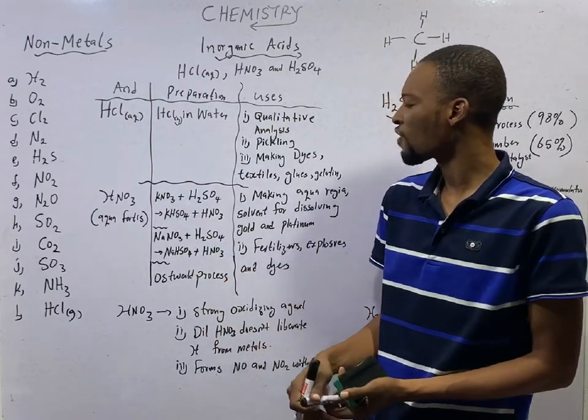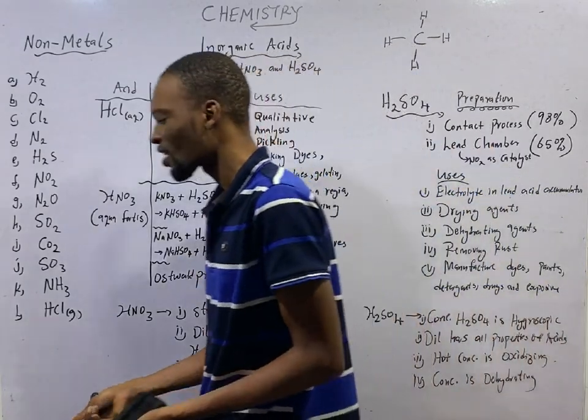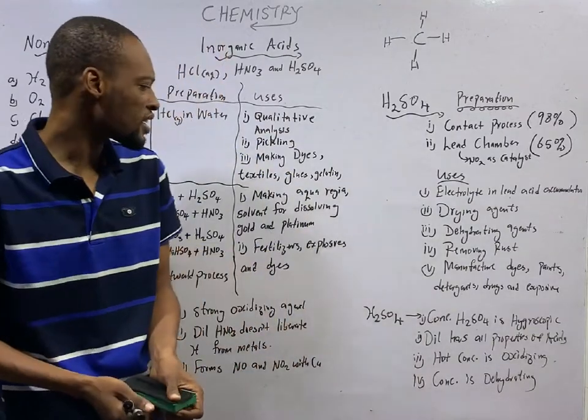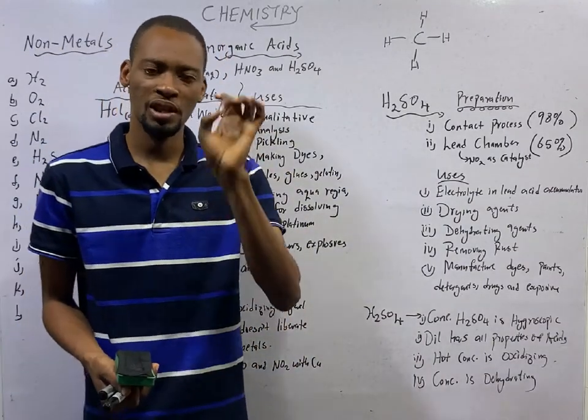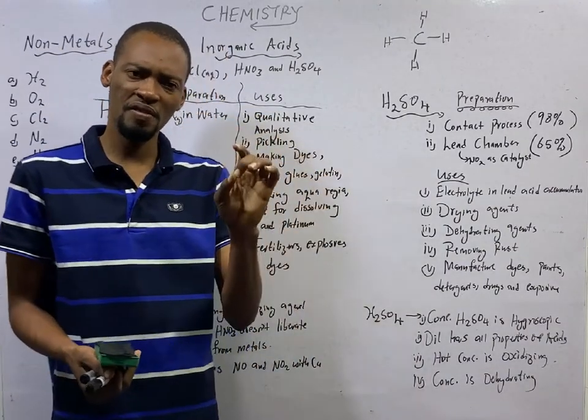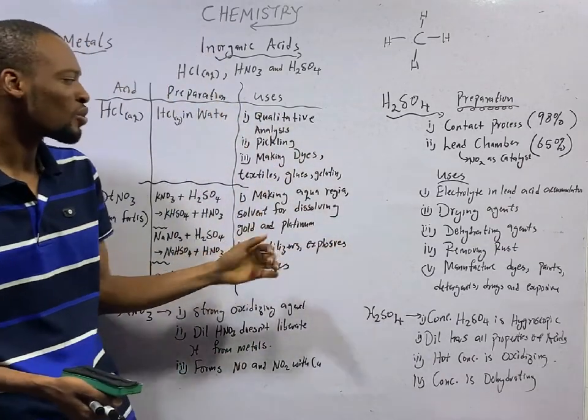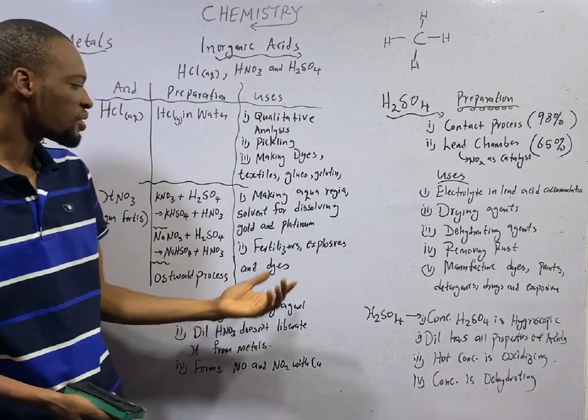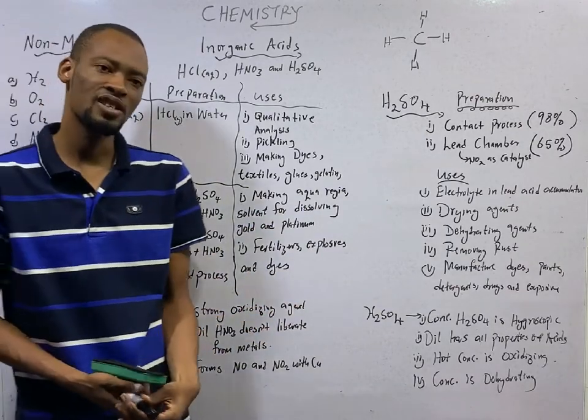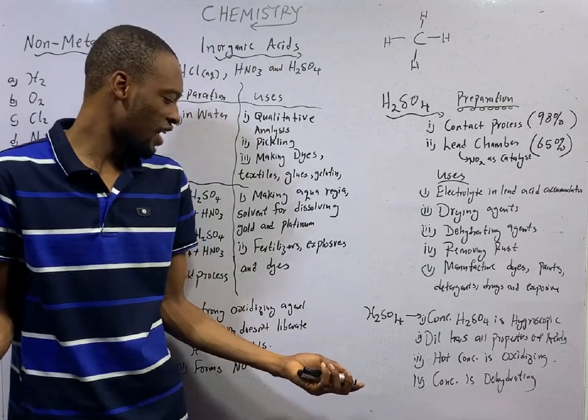The uses are making of aqua regia. Aqua regia is a solvent for dissolving gold and platinum. Then it is used in fertilizers, explosives, and dyes.